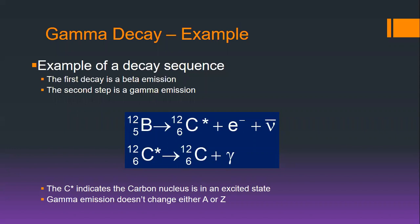How are gamma rays produced? Like x-rays, UV, and visible light, there is a quantum mechanical transition that takes place. For visible light, ultraviolet, and x-rays, electrons transition from a higher energy level to a lower energy level. Gamma rays are produced when protons and neutrons drop from a higher energy state to a lower energy state within the nucleus. Nuclear energies are much greater than electronic energies, and thus the energies involved in gamma rays are far greater than typical ultraviolet light, x-rays, or visible light.